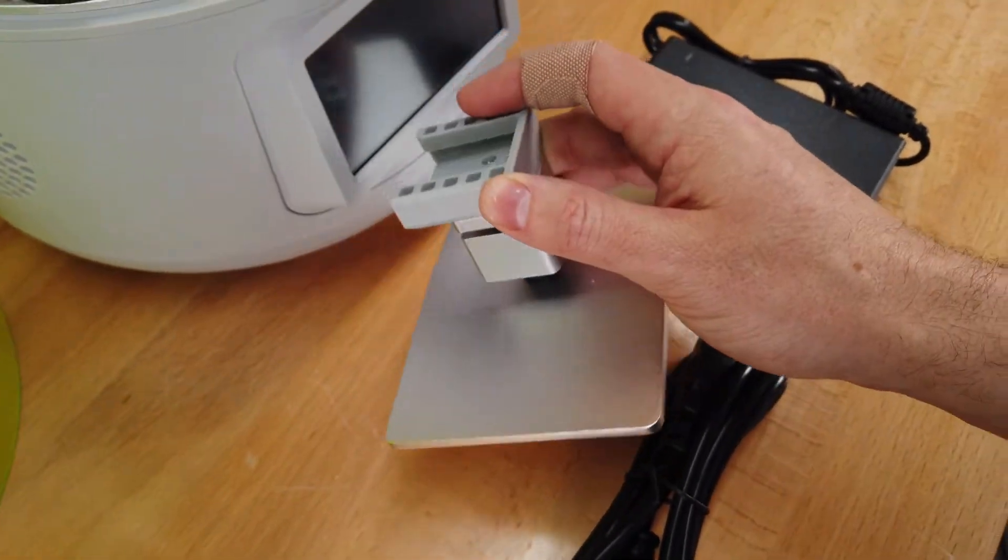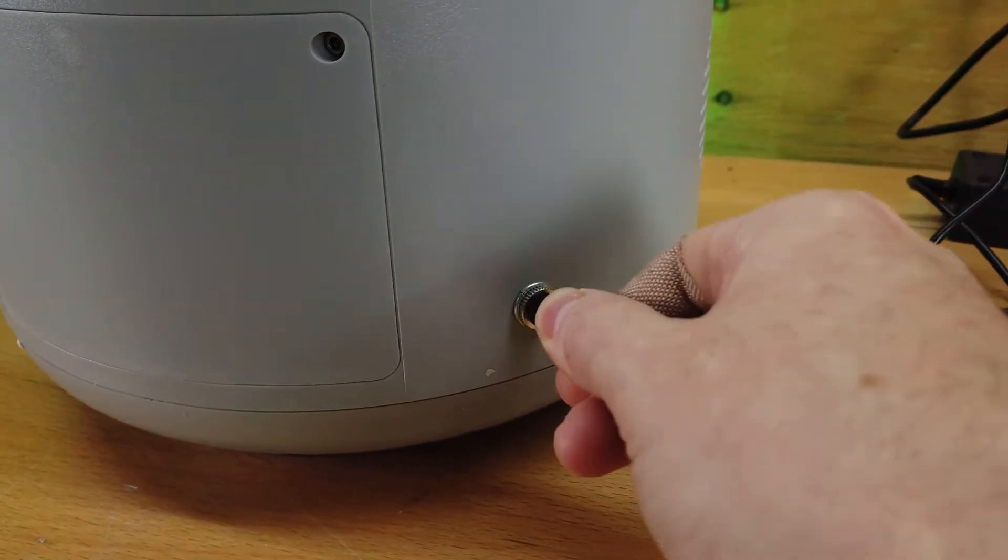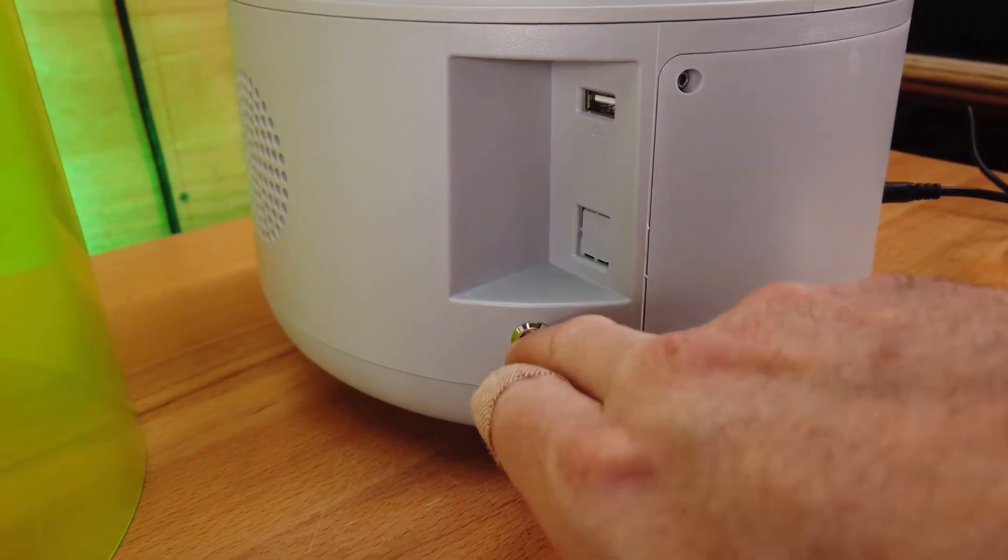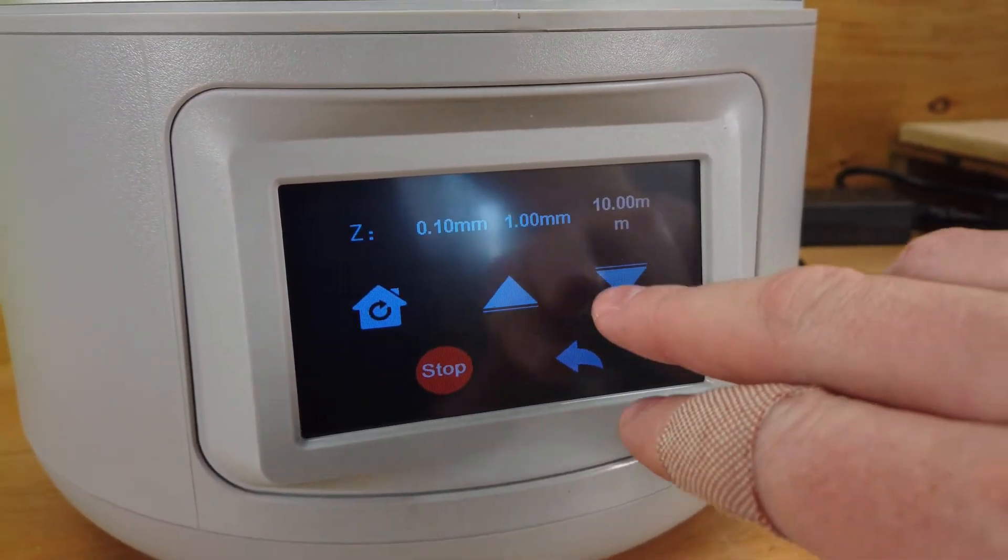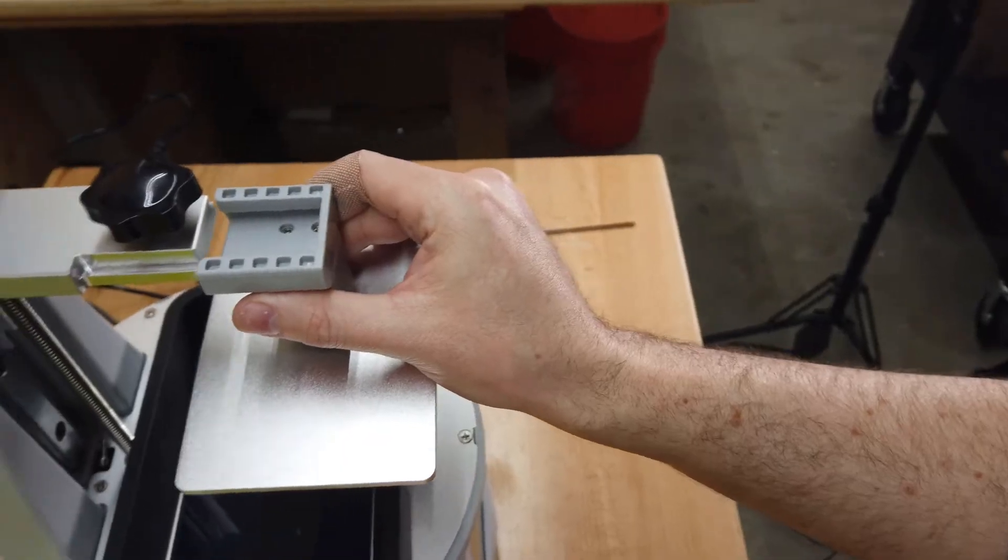Before I can install the build plate, I need to turn the machine on. I'm just going to plug it in and turn it on with this tiny little switch on the back. With the machine on, I can use the control panel in the front to raise the Z-axis. This is going to allow me to put the build plate on.